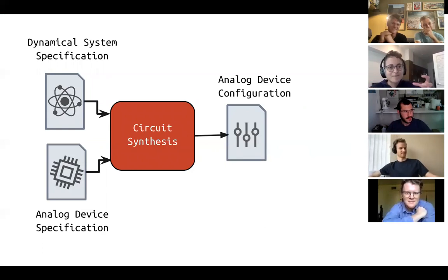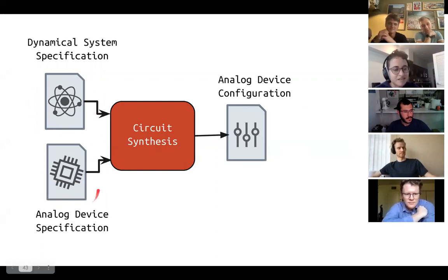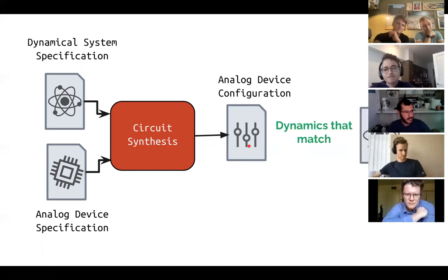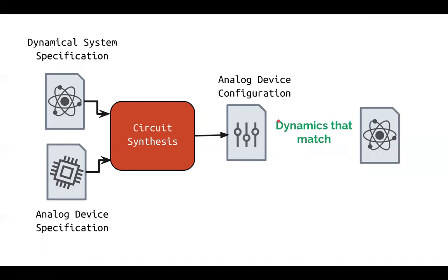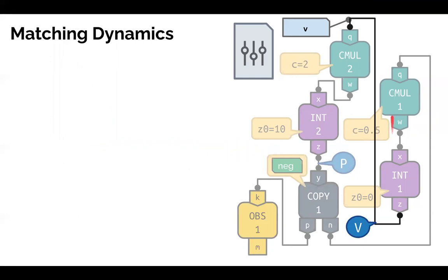Circuit synthesis takes as input the dynamical system specification and analog device specification and produces a configuration where the dynamics match. 'Dynamics matching' means: if you take any labeled wire and symbolically propagate the variable through the circuit, you can validate the dynamics match for all other labeled wires. For example, taking wire 'v' implementing velocity and propagating it through the cMOL2 block gives output equal to 2 times v.